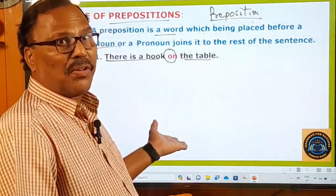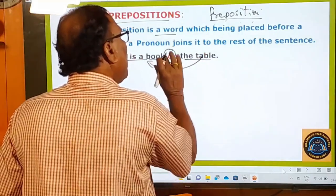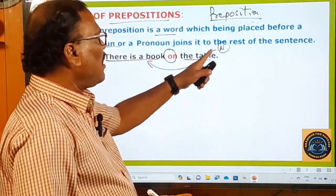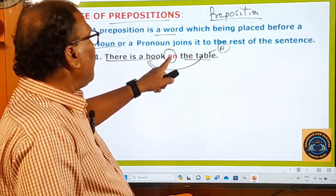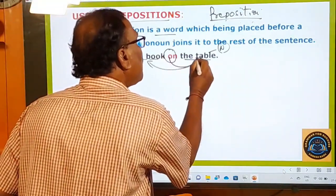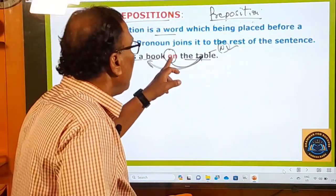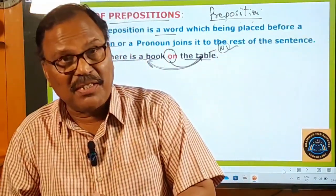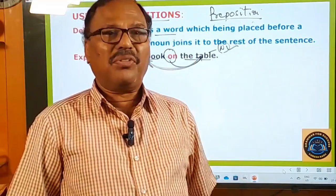The same principle applies in: The cattle are grazing in the fields. The word 'in' is placed before 'fields', a noun, and joins it to the rest of the sentence. Another example: She is very angry with him. Here 'with' is placed before 'him', a pronoun, and joins it to the sentence. And: He is afraid of her — 'of' joins the pronoun 'her' to the remaining sentence.